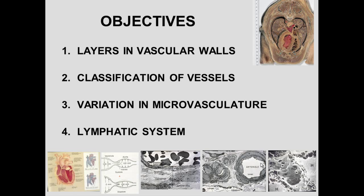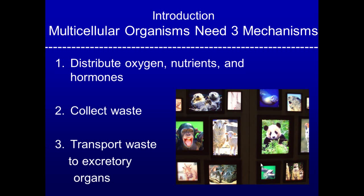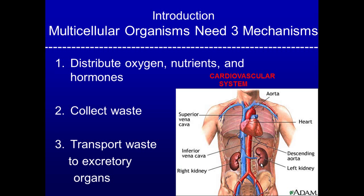Multicellular animals like us need three mechanisms: one, to distribute oxygen, nutrients, hormones, and other inflammation mediators; two, to collect waste from cells; and three, to transport waste to excretory organs. This is accomplished by the cardiovascular system — here you can see the muscular heart, the arteries, veins, as well as the kidneys, which are the excretory organs.